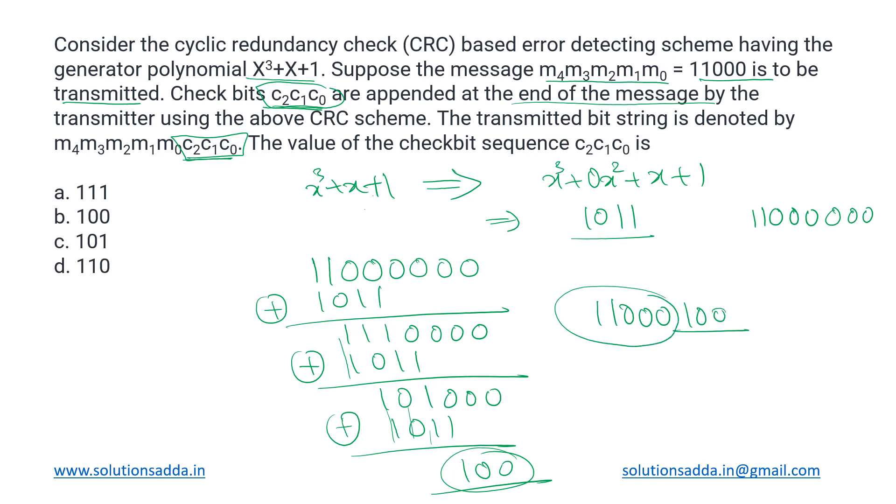So the check bit sequence which we have been asked—c2, c1, c0—is actually 100 for this case. So the correct answer will be b.